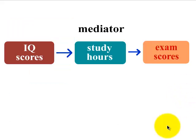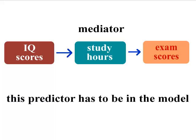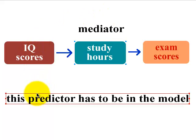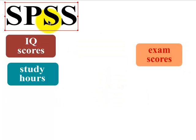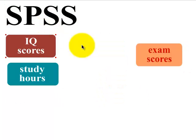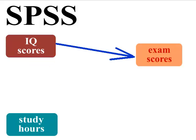Here's the typical model you see in most books. Study hours would be considered a mediator. This has always kind of confused me, because I was always told that if the mediator was not in the model, then you would not have a significant regression between your other predictor — IQ scores — and exam scores. That's not 100% true using SPSS. So we got our predictors, IQ scores and study hours, and our DV — our outcome — is exam scores.